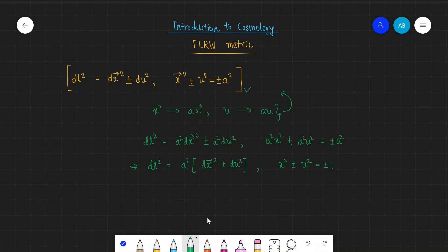Let's differentiate this constraint to find 2x dx plus-minus 2u du equals 0, which we write as u du equals minus-plus x dx.